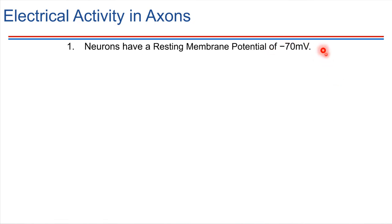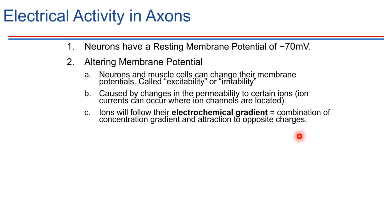Given that minus 70 millivolts is the normal resting value for neurons, what we're going to be doing is considering deviations from this value. It turns out that neurons are very excitable — we say that they are excitable cells or irritable cells. What this means is that they are capable of changing their resting membrane potential, and they can do it really fast. This can happen by altering how permeable the membrane is to very specific ions, since each type of ion may have its own special channel across the plasma membrane.